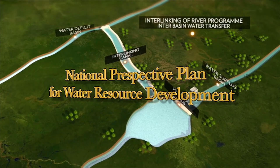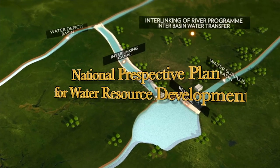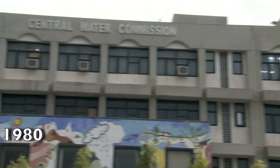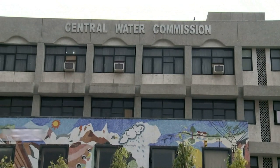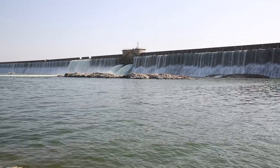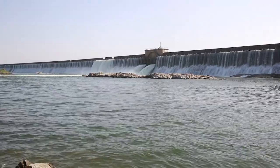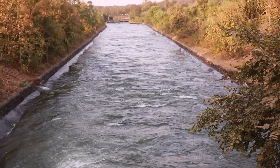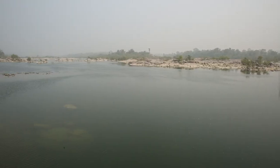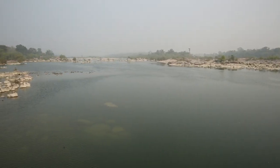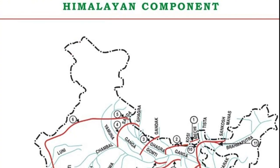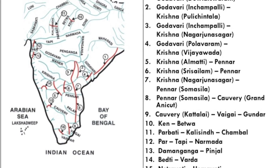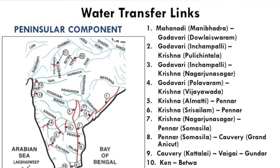In 1980, the then Ministry of Irrigation and Central Water Commission formulated a National Perspective Plan (NPP) for water resources development, envisaging inter-basin transfer of water from surplus basins to deficit ones to minimize regional imbalances. The plan has two components: Himalayan rivers development and peninsular rivers development.